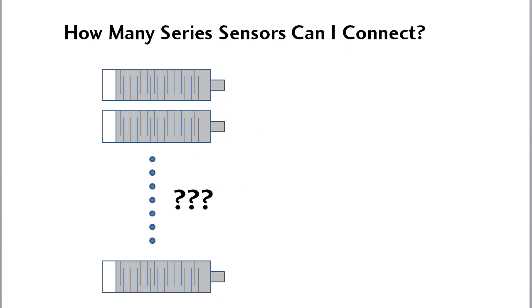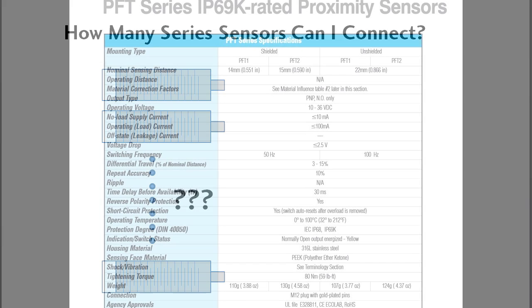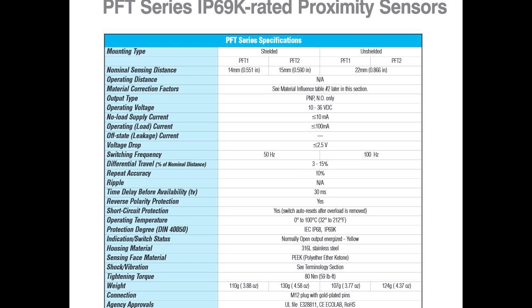How many sensors can you put in series? Well, that depends on the sensors. If you look at the spec sheet, you can see a parameter called voltage drop. That's the voltage drop across the sensor.